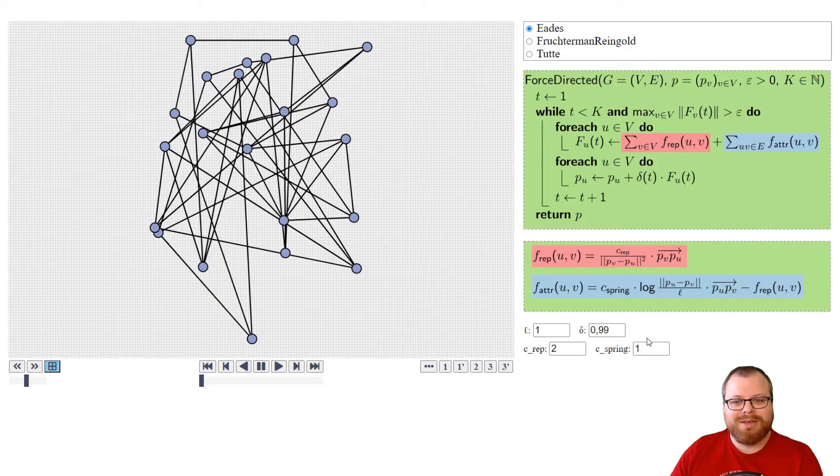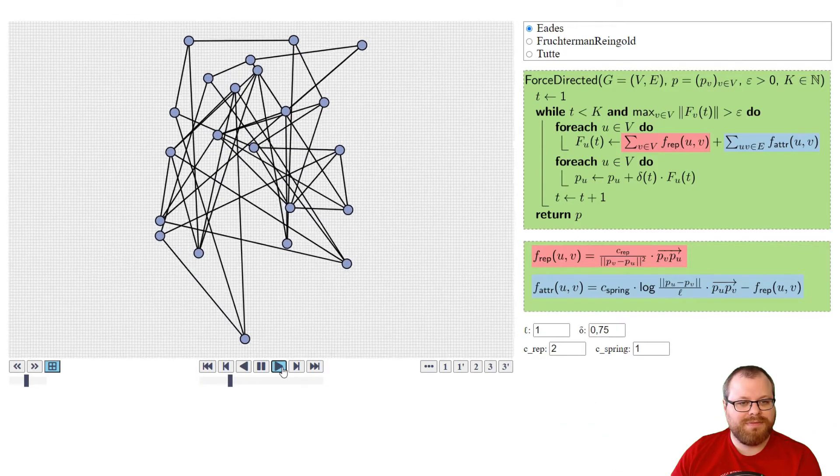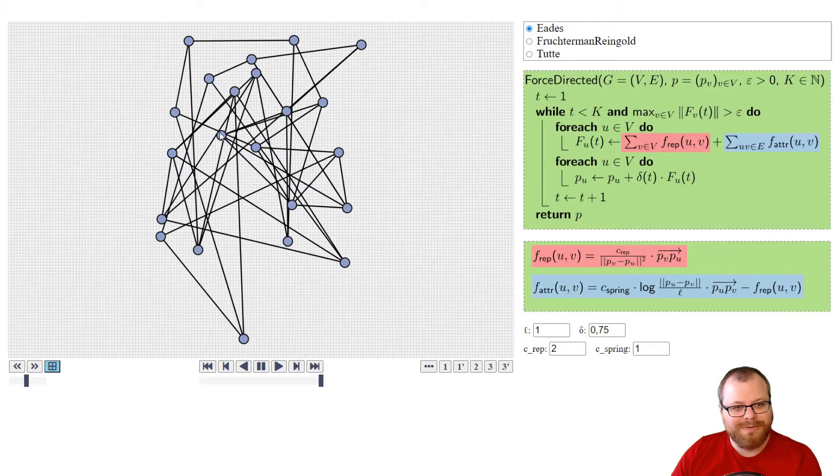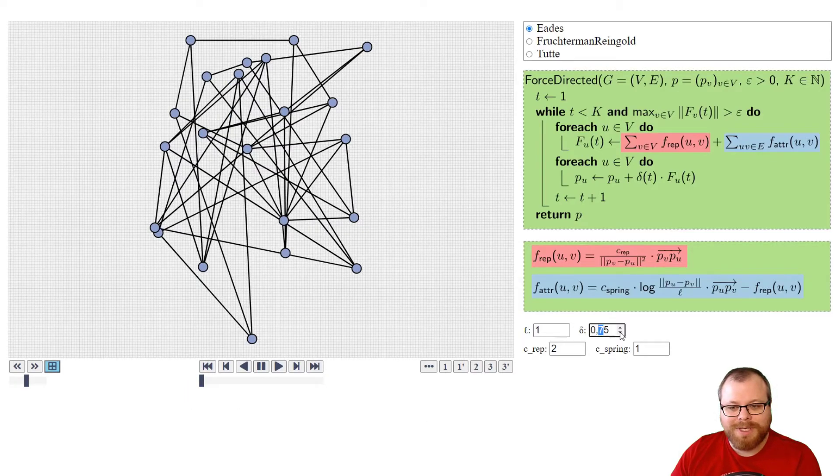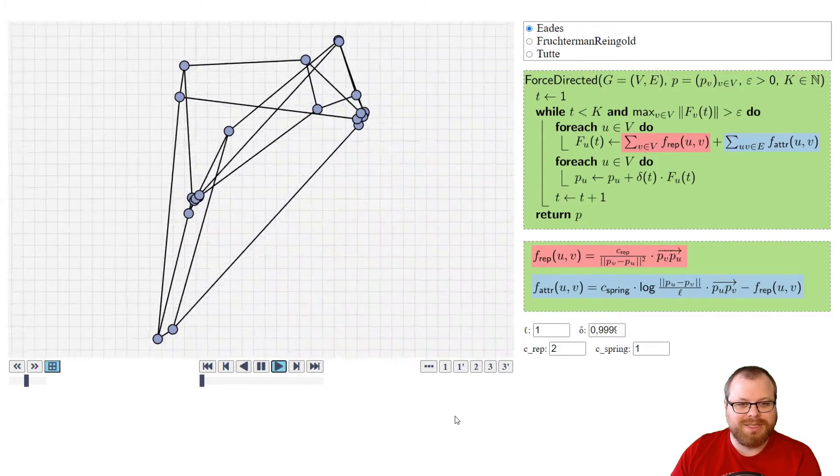And then we can also play around with this cooling factor. So if we make this much smaller, let's say 0.75, then we go so fast that we get below this epsilon threshold, and we don't even continue. But if I make this very large, then also some funny things can happen, as you will see now.